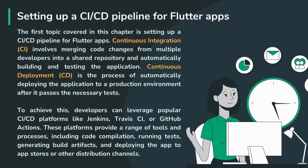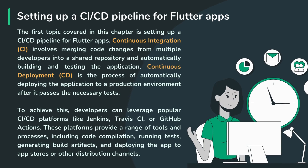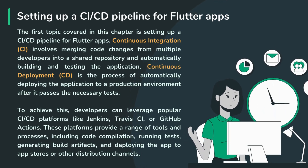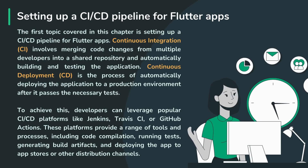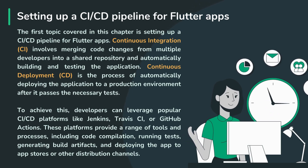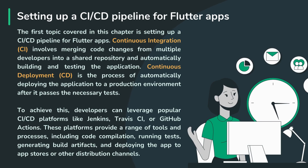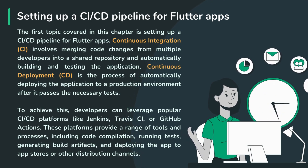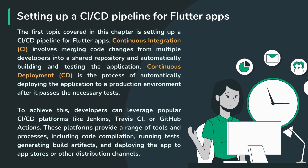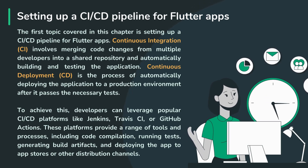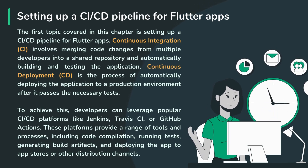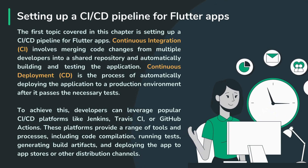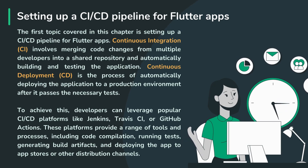The first topic covered in this chapter is setting up a CI/CD pipeline for Flutter apps. Continuous Integration involves merging code changes from multiple developers into a shared repository and automatically building and testing the application. Continuous Deployment is the process of automatically deploying the application to a production environment after it passes the necessary tests. To achieve this, developers can leverage popular CI/CD platforms like Jenkins, Travis CI, or GitHub Actions.